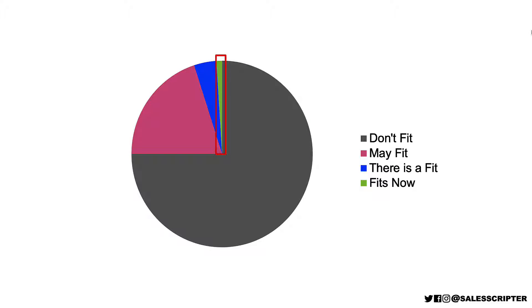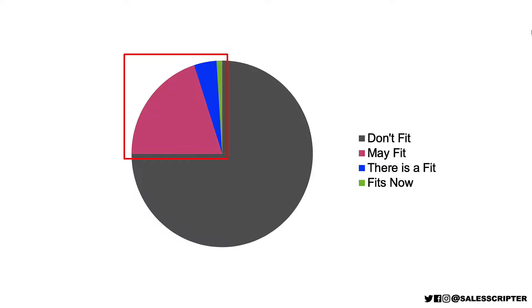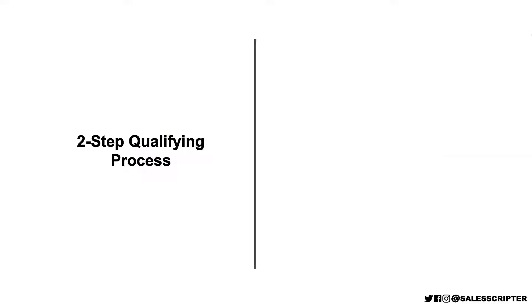Another mistake is only focusing on trying to sell to prospects that have a need right now. But as you can see, there are a lot of other prospects we probably want to spend our valuable time with. We want a sales strategy that focuses on the right quadrant. With our process to gather more information, we are qualifying prospects to see where they are, and we divide our qualifying process into two steps.